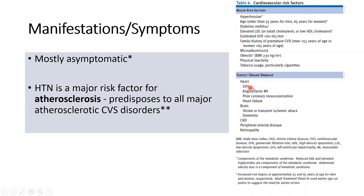Then you have angina — the pain of myocardial ischemia — as well as revascularization procedures and heart failure. Advanced patients of hypertension can go into heart failure when they present to the doctor. The second organ to be injured is the brain — you have strokes and dementia.